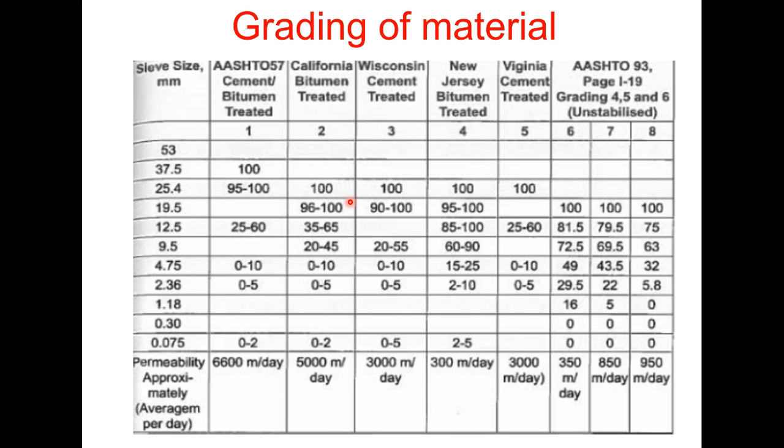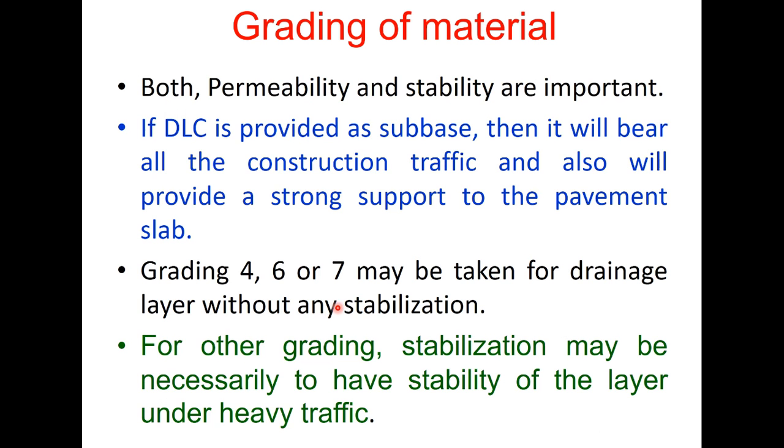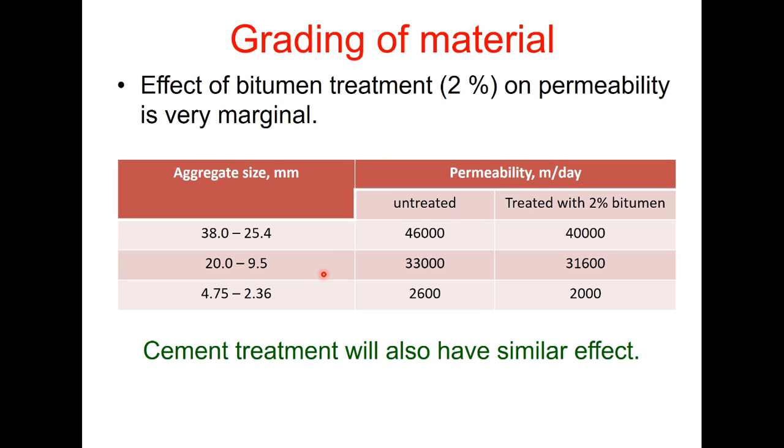But for other gradings you need to stabilize it either with the bitumen or with cement. Now when you treat a grading with 2 percent bitumen then the effect on permeability is very marginal as shown in this table that an untreated material will have a 46,000 meter per day permeability which will reduce to 40,000 with 2 percent bitumen and cement treatment also will have similar kind of effect.